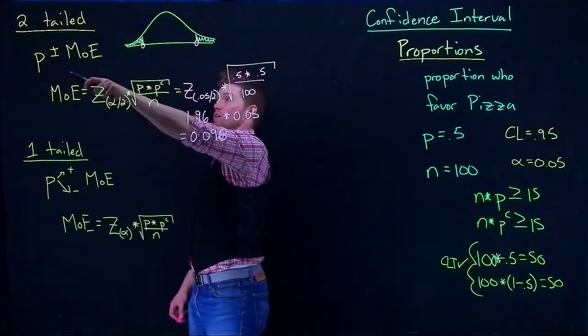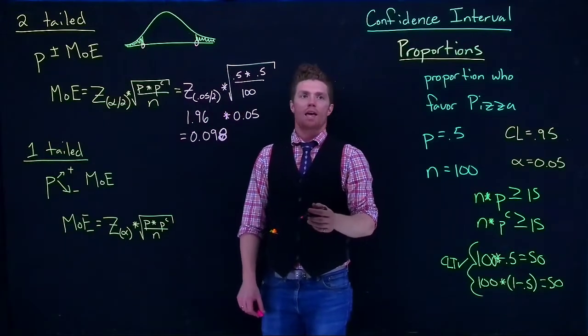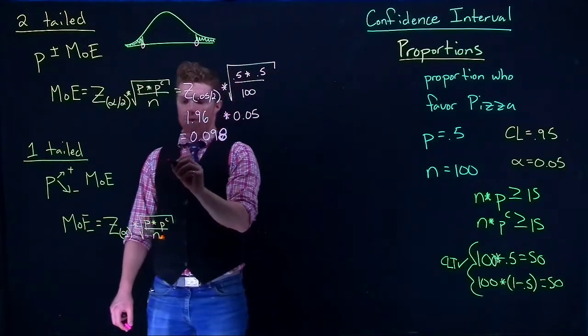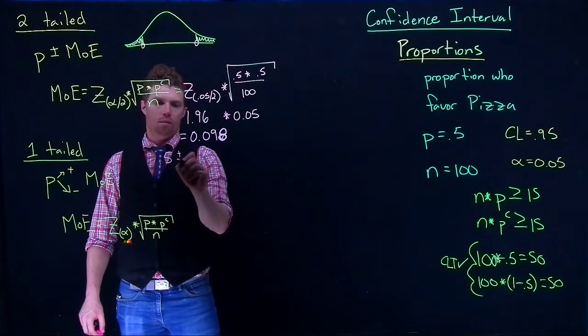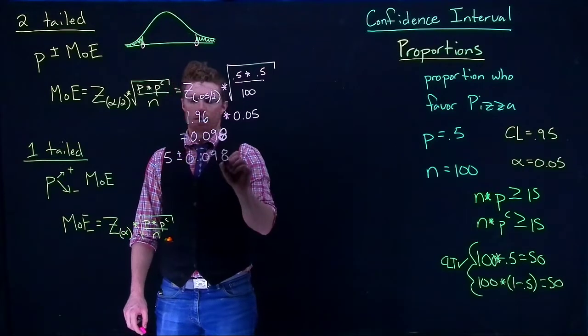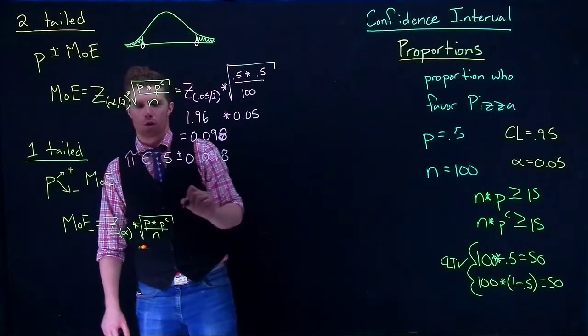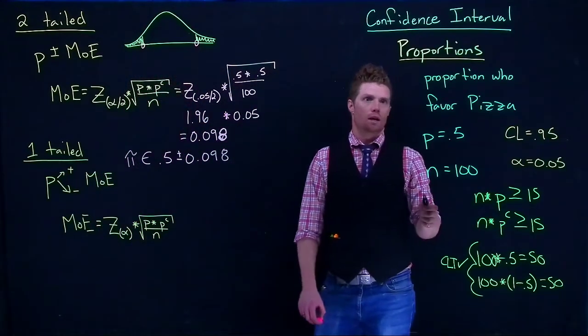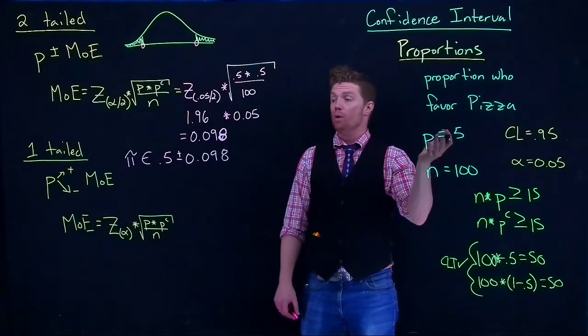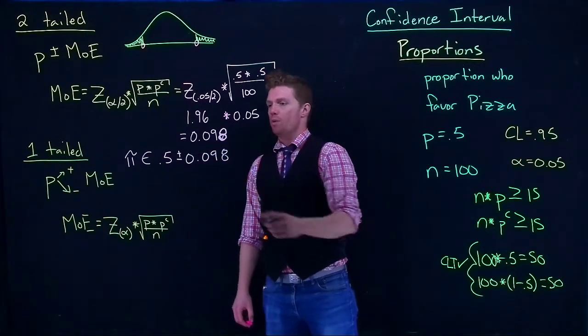So now we can just do plus or minus for our confidence interval. We know that this is going to be 0.5 plus or minus 0.098. We can say that the true proportion, or pi of people of the population - maybe we took our sample from Casper College students - they'd be somewhere in this range.